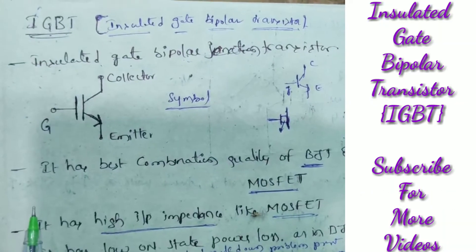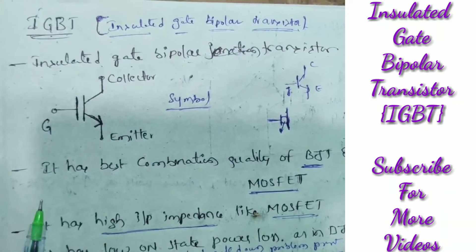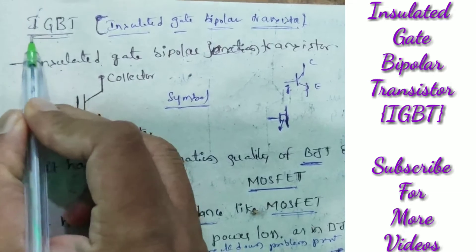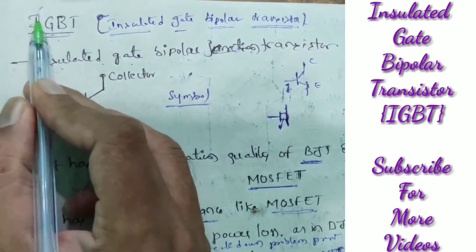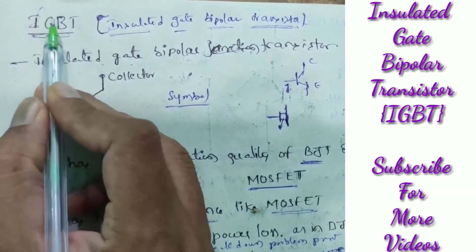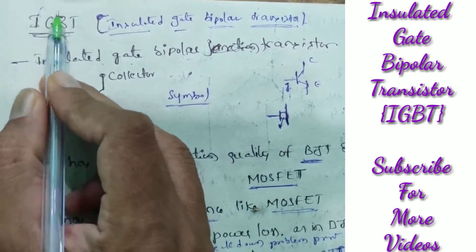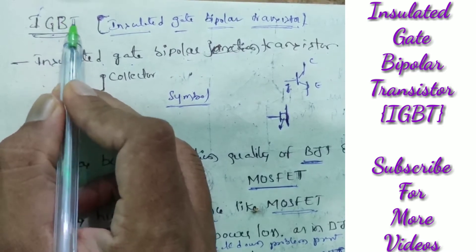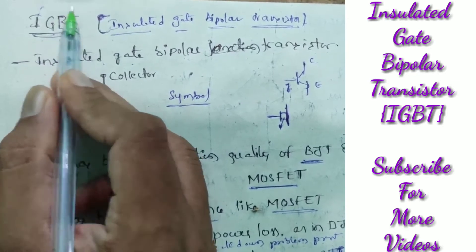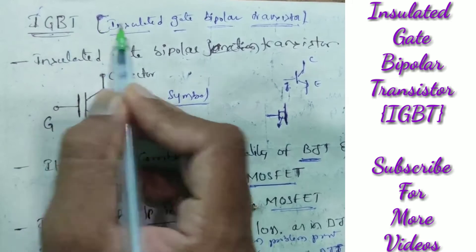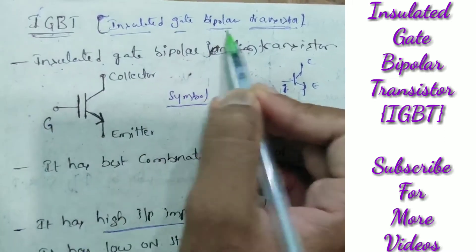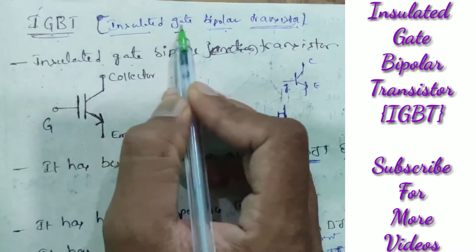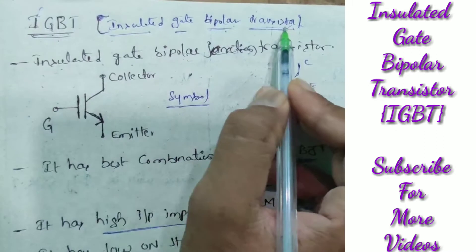In this video, I am going to discuss about IGBT. I stands for insulated, G stands for gate, B stands for bipolar, T stands for transistor. Totally, IGBT stands for insulated gate bipolar transistor.